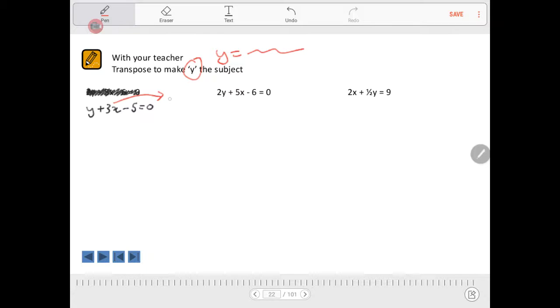So with a plus 3x, that means becoming a minus 3x. And with a negative 5, that means becoming a plus 5. So the result is that y equals negative 3x plus 5. So y is now on its own in the equation. We're done.